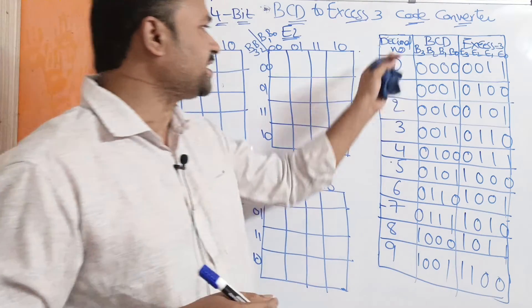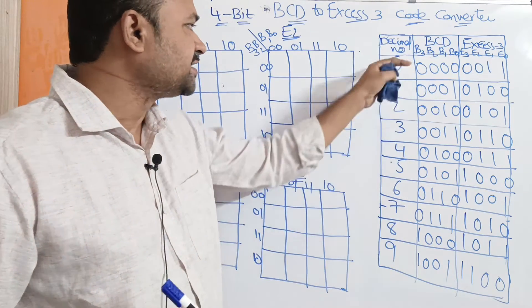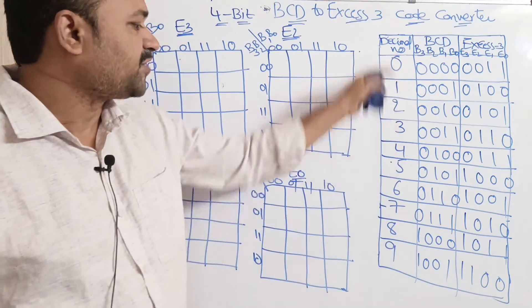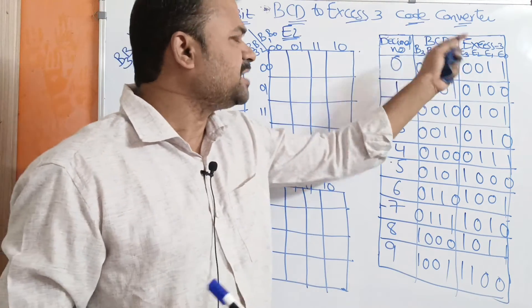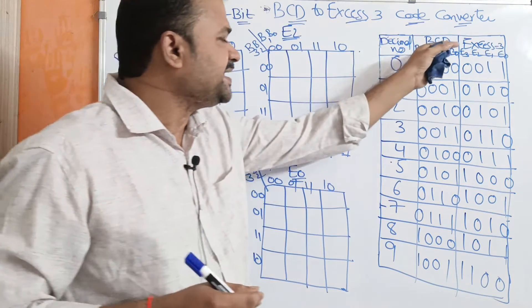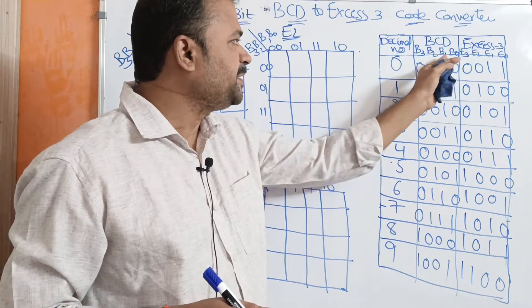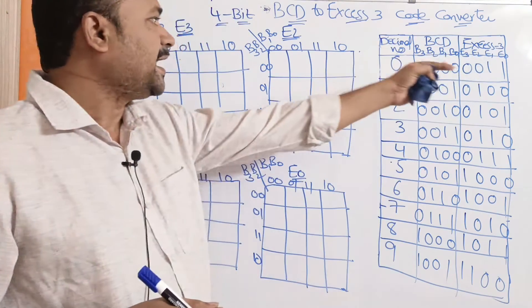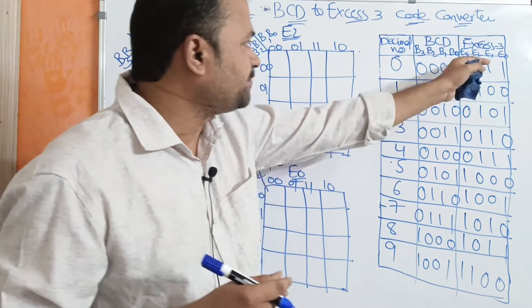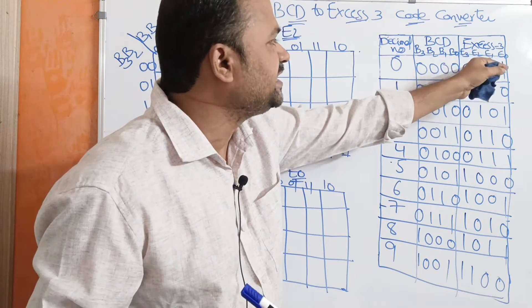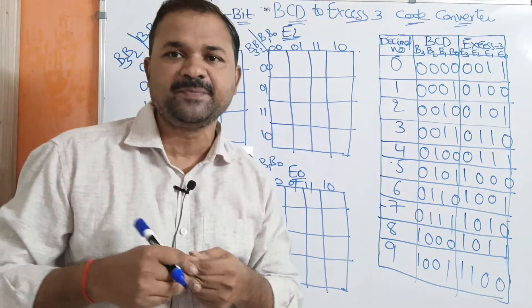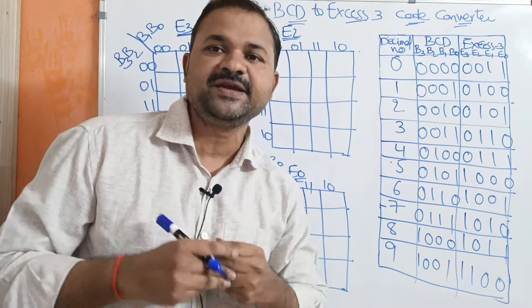This is the truth table here. The first column represents BCD digits from 0 to 9, so 10 decimal numbers. The second column represents the input, that is the BCD number, represented using 4 bits: B3, B2, B1, B0. The third column represents the XS3 code, represented using 4 bits: E3, E2, E1, E0. So BCD is the input number whereas XS3 is the output number.